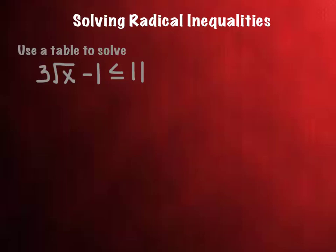So if we have used a table to solve 3 square root x minus 1 is less than or equal to 11, if we were to try it with algebra, we would first want to add 1 to both sides, and we would have 3 square root x is less than or equal to 12, and then we would divide both sides by 3.